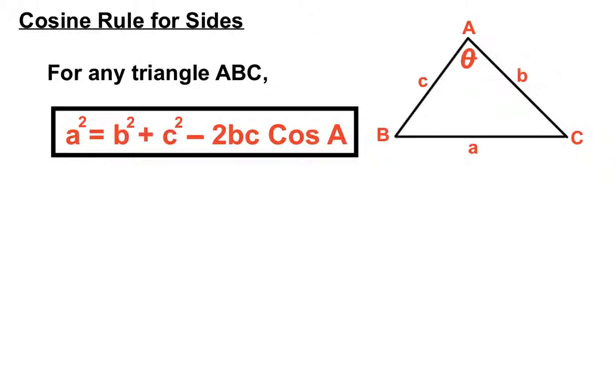Let's recap on the cosine rule for sides. We saw in the last video a squared equals b squared plus c squared minus 2bc cos A. That was designed to find the missing length of one of the sides there.